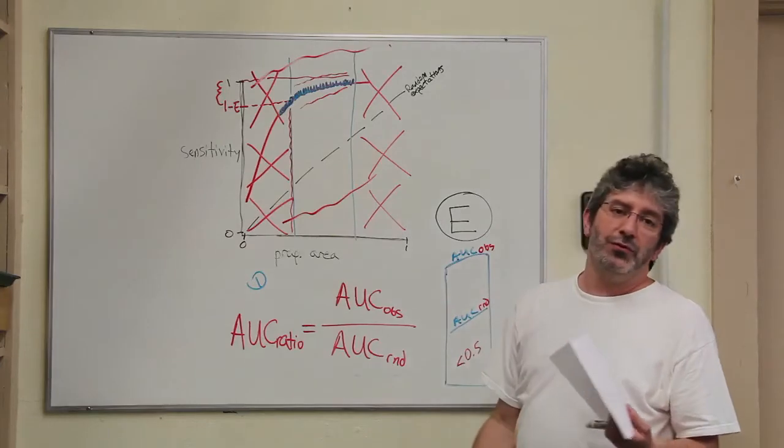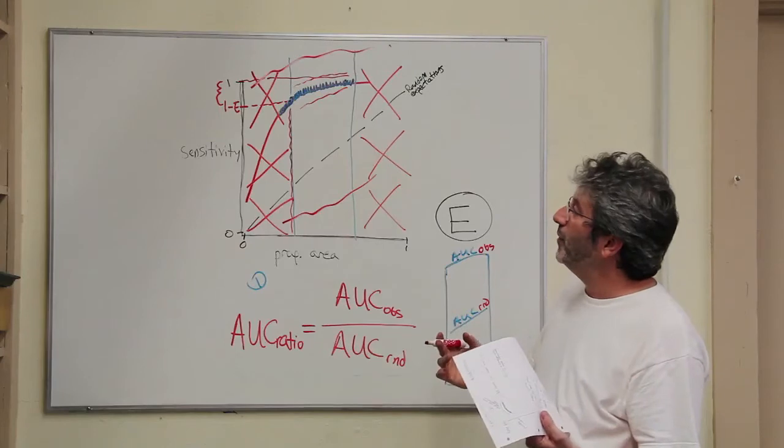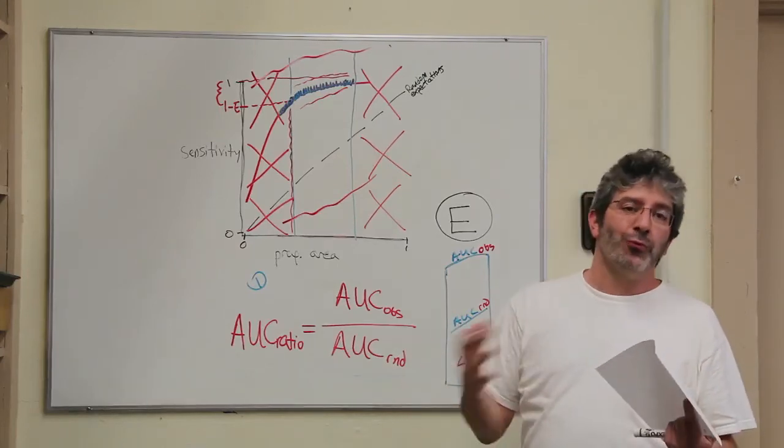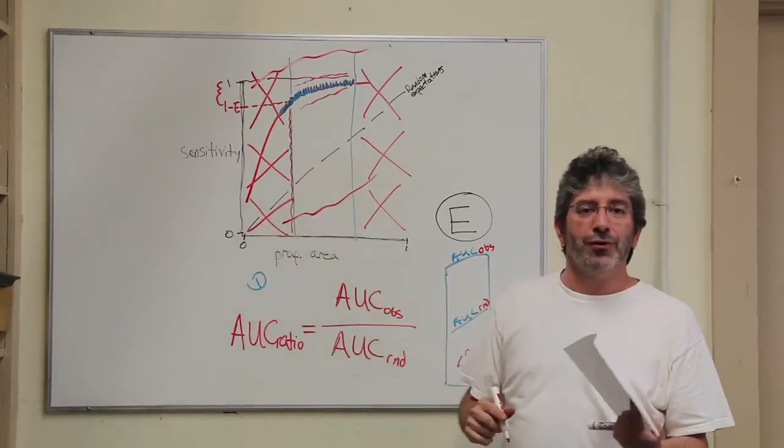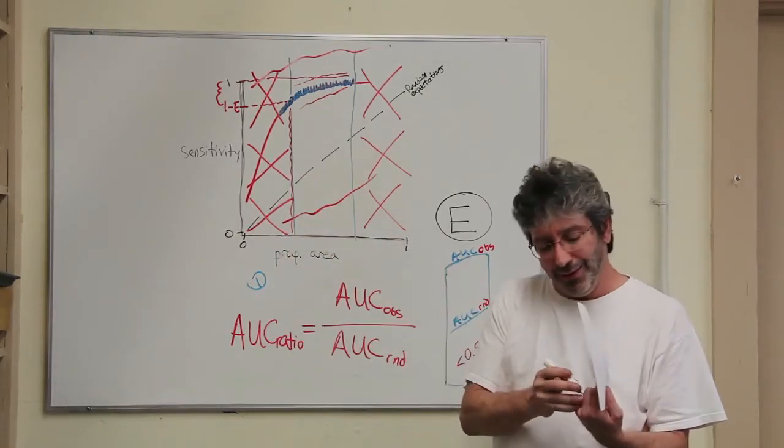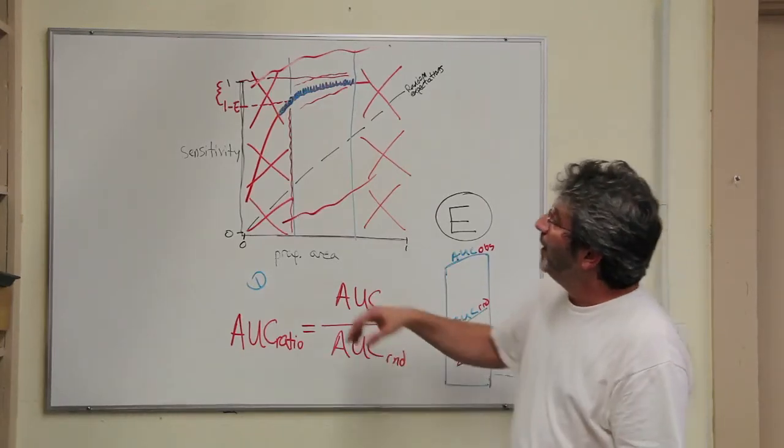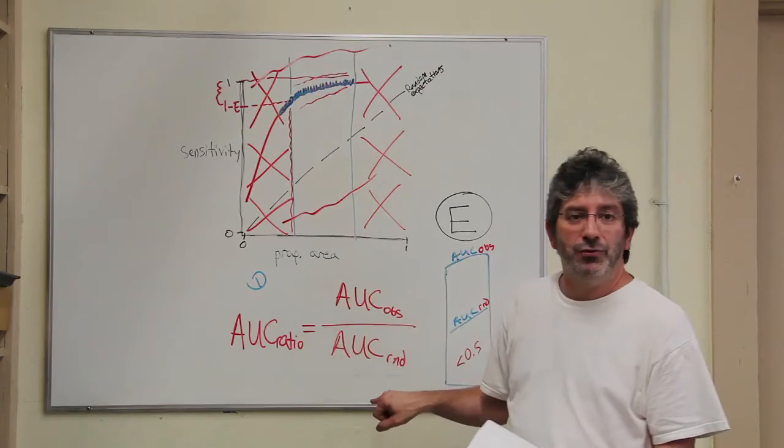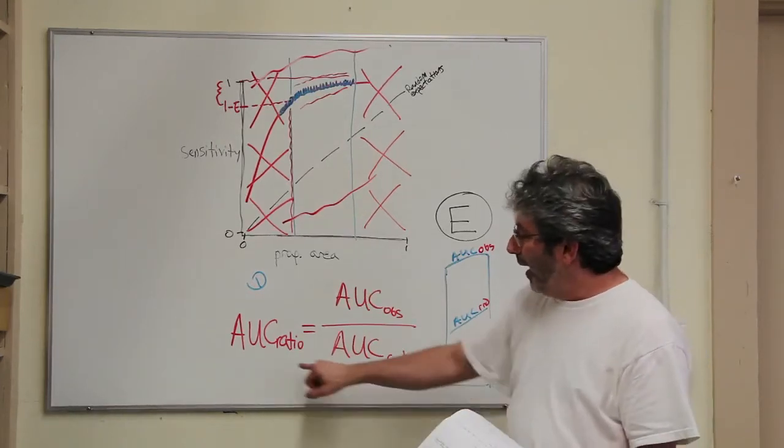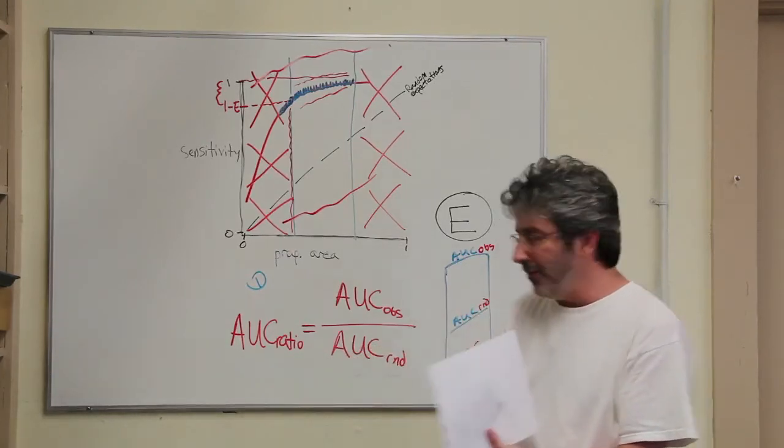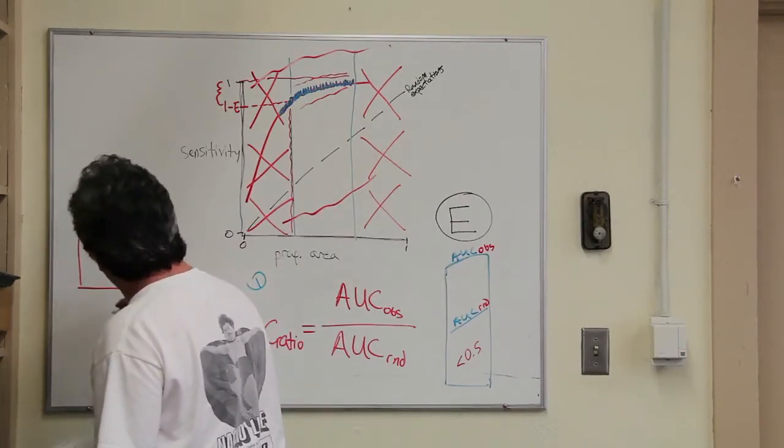And so essentially this is random subsampling with replacement. But essentially what we're doing is we're creating a lot of replicate datasets subsampled from the dataset that our overall curve was based on. And we may do that 1,000 times or 10,000 times, and each time we calculate the AUC ratio for each one of those replicate subsamples. At the end, we look at the distribution of those replicate AUC ratios.